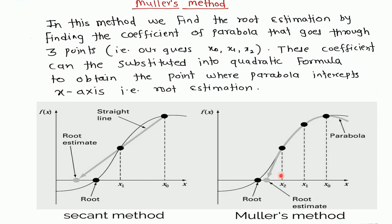But in Muller method, if this is the graph of the function and these are the three initial approximations x0, x1, and x2, then we project a parabola through this point. And then this parabola cuts the x-axis at this point. This is our root estimation.